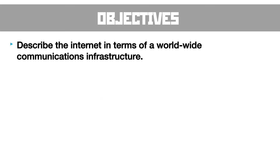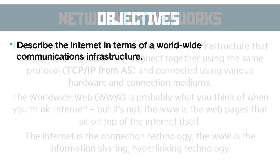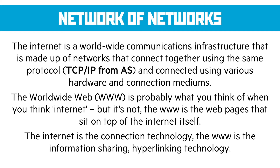Our last objective is to describe the internet in terms of a worldwide communications infrastructure. The internet is basically a bunch of networks connected together around the world using the same protocol — TCP/IP, which we learned about at AS level. It's connected using various hardware: wired and wireless routers, switches, hubs, and different connection mediums such as optical fiber, copper, and coaxial. It doesn't matter what physical medium or connection type is used, as long as everything communicates using the same protocol. Bridges are used to communicate between different networks with different protocols, so the internet is this huge communications infrastructure made up of lots of different pieces that all communicate nicely.